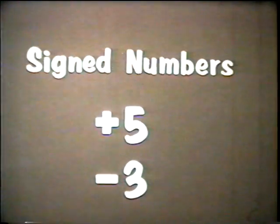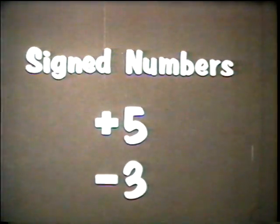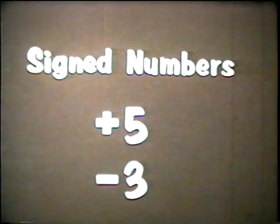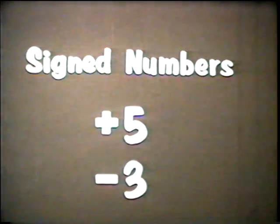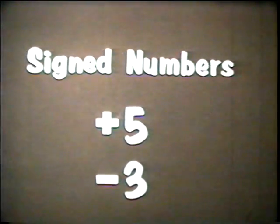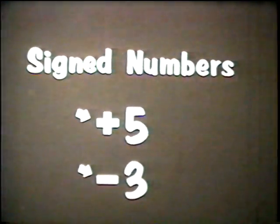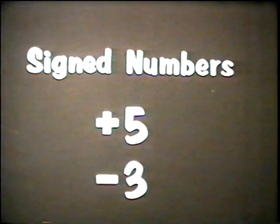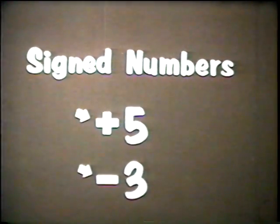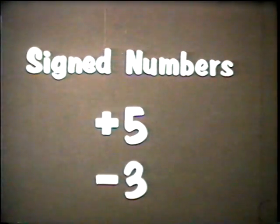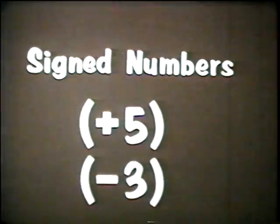Positive and negative numbers like these are called signed numbers, and they can be used to indicate direction or quality. To avoid confusing these signs of quality with addition or subtraction signs, signed numbers are sometimes enclosed in parentheses.